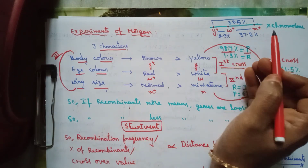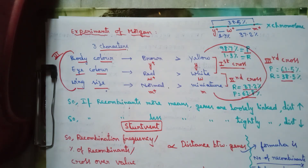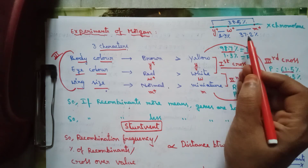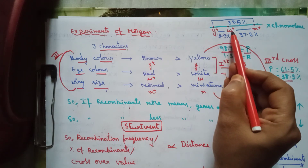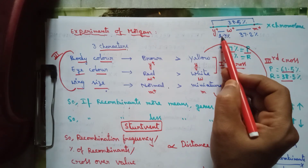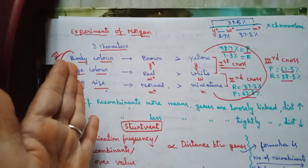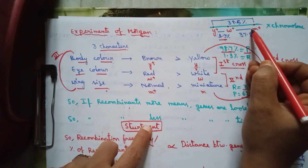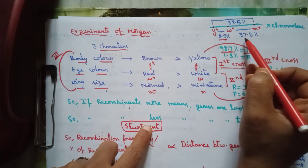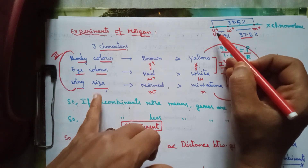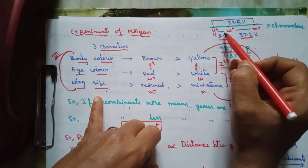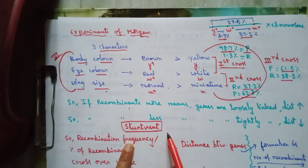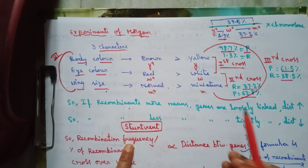Chromosomal mapping means finding the sequence of genes or locating the position of genes present on the same chromosome. Between y+ and w+, the distance is less, so they are tightly linked and fewer recombinants are formed. The distance between eye color and wing size genes is greater, giving 37.2 percent recombinants. The distance between body color and wing size genes is greatest, giving 38.5 percent recombinants.